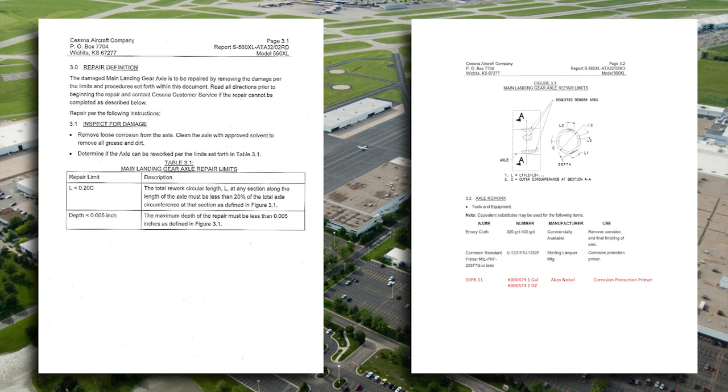First of all, in Table 3.1 under Main Landing Gear Axle Repair Limits, we see that the repair limitation is not to exceed 20% of the entire circumference of the axle. It reads this way: the total reworked circular length at any section along the length of the axle must be less than 20% of the total axle circumference at that section as defined in Figure 3.1.